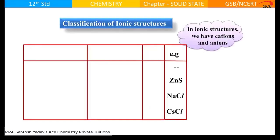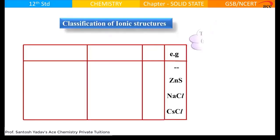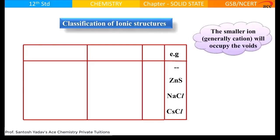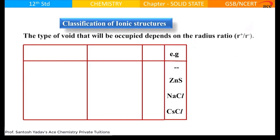Classification of ionic structures. In ionic structures, there are cations as well as anions. The larger of these two ions is the anion, which will occupy the lattice point. That means they will either make up AAA packing like SCC, ABAB packing like HCP, or ABCA packing that is FCC. Cations will go into voids, and the radius ratio — the size of cation to that of anion — will decide which void the cation occupies.